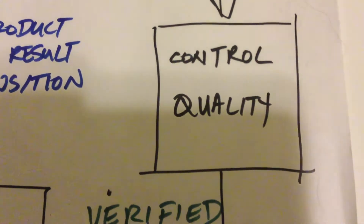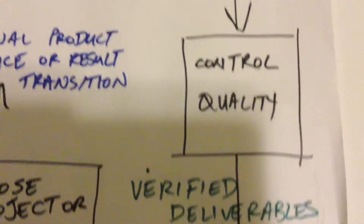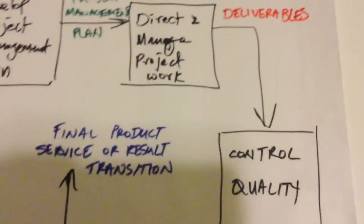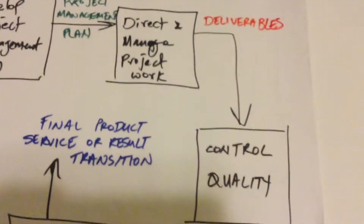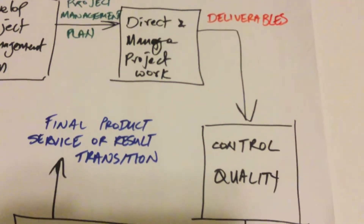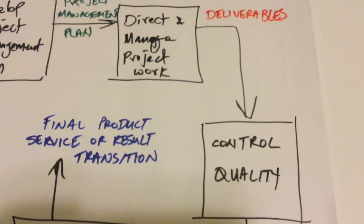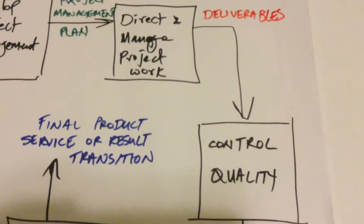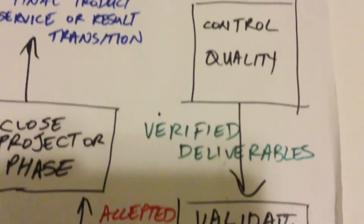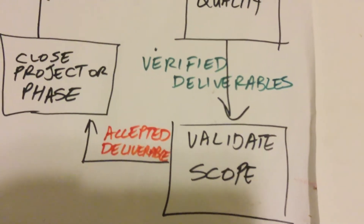That checking is done in control quality. In control quality, the deliverable is checked. And if we find that deliverable to be fit for use from our perspective as the performing organization, then we get verified deliverables.